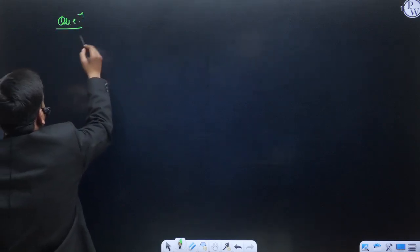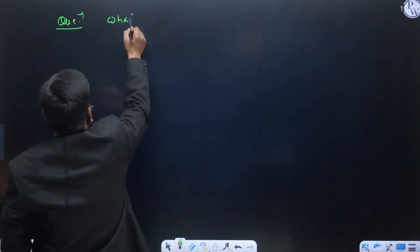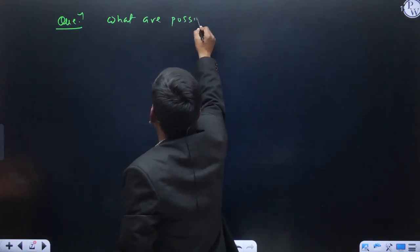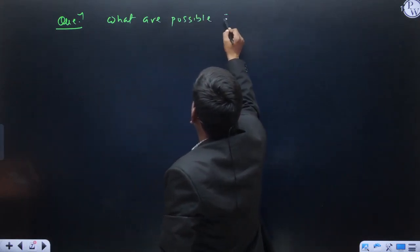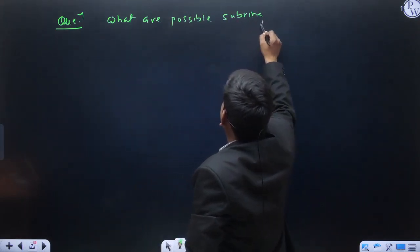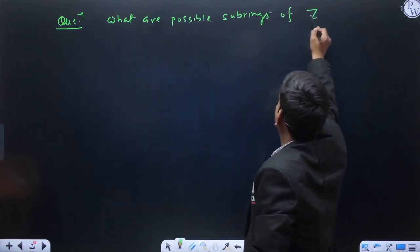Chhota mota question — what are the possible subrings of Z?